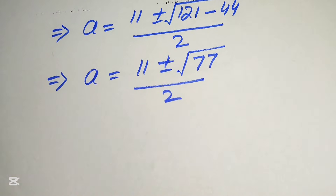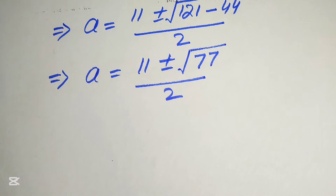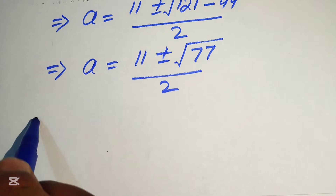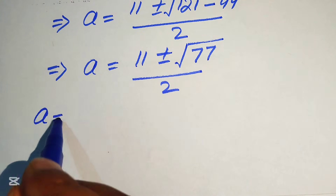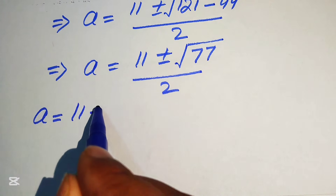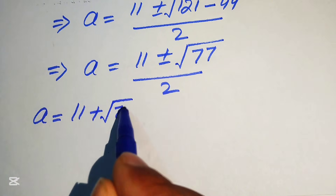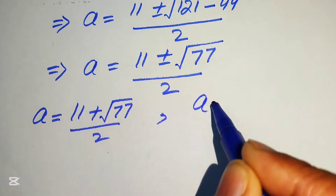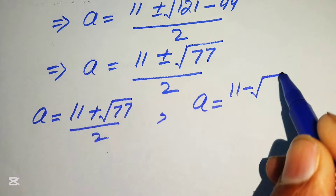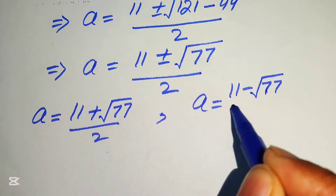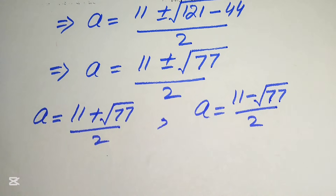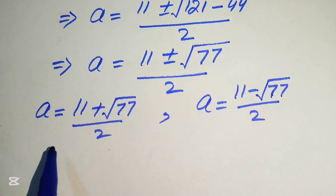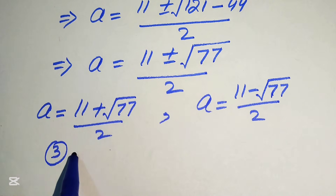We write a equals to 11 plus or minus square root of 77 divided by 2, since 121 minus 44 equals 77. Now we need to find the corresponding values of b. We split this into two cases: the positive case gives a equals to 11 plus square root of 77 divided by 2, and the negative case gives a equals to 11 minus square root of 77 divided by 2.